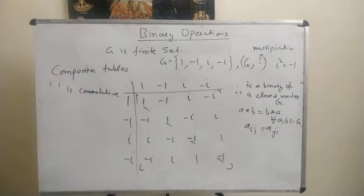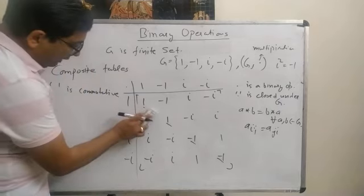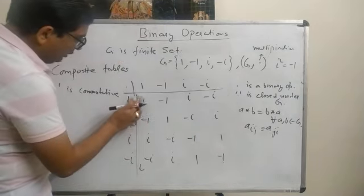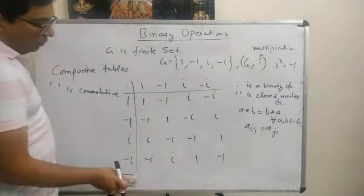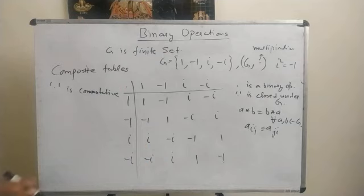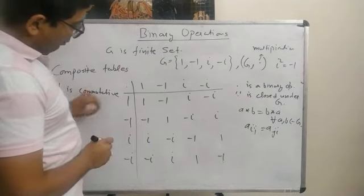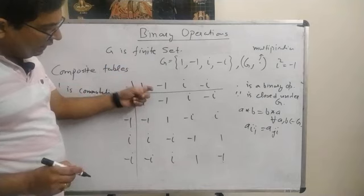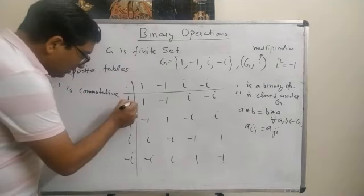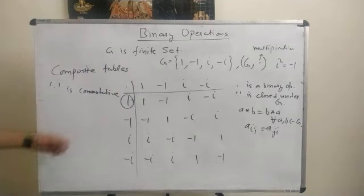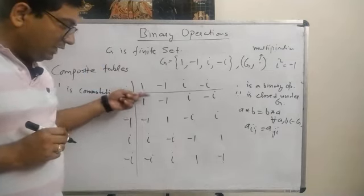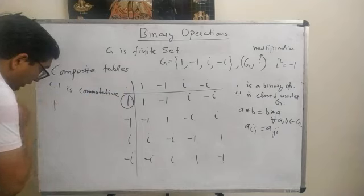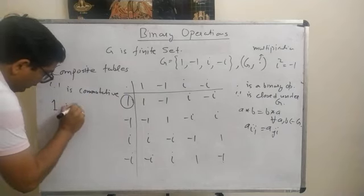Next, we can find the identity element using composite tables. We look for a row which is identical to the header row. We can see that the first row is identical to the header row, so we say 1 is the identity element.